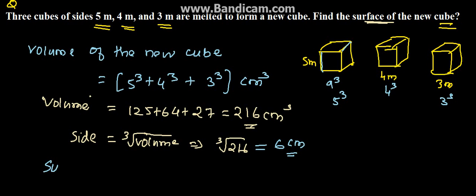The surface area for a cube is 6a². So this comes to 6 into 6 into 6. So it is again 216. Therefore, 216 centimeter square is the surface area of the new cube. Thank you.